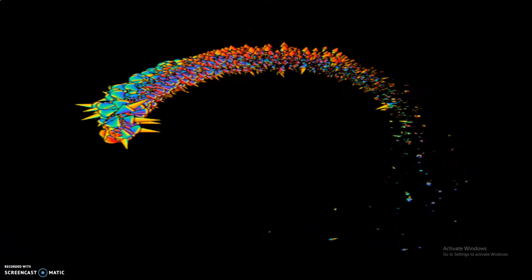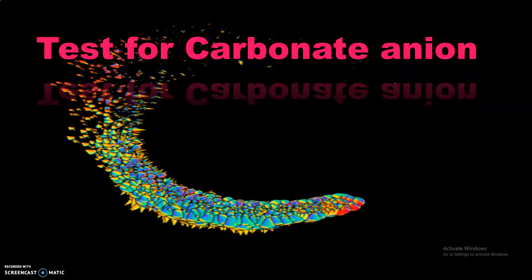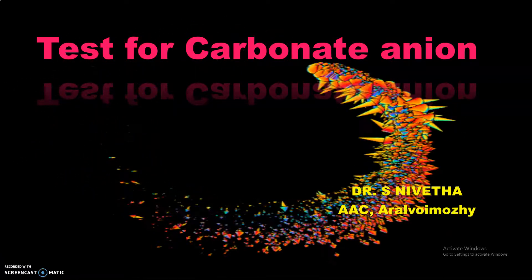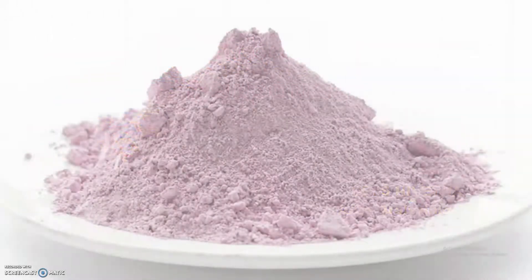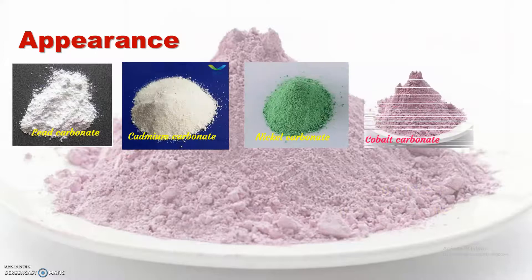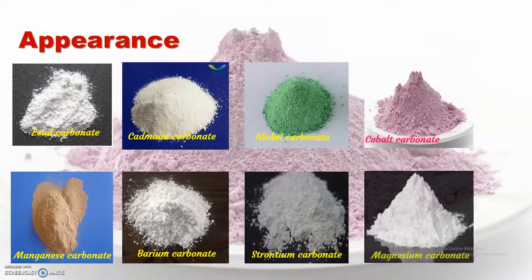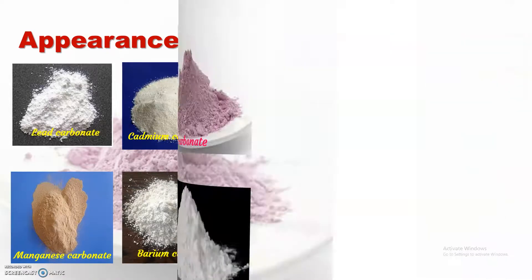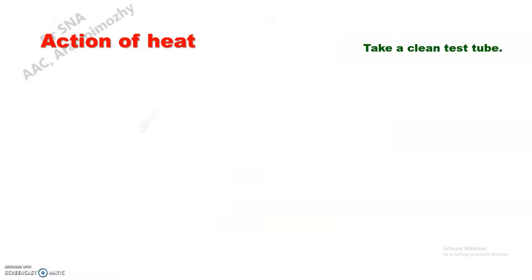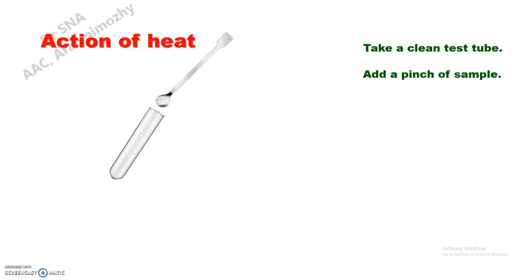Test for carbonate. First, we can see the physical appearance of some carbonate salts. Carbonates are mostly amorphous in nature. Next, the chemical properties. First: action of heat. Take a clean test tube and add the sample.